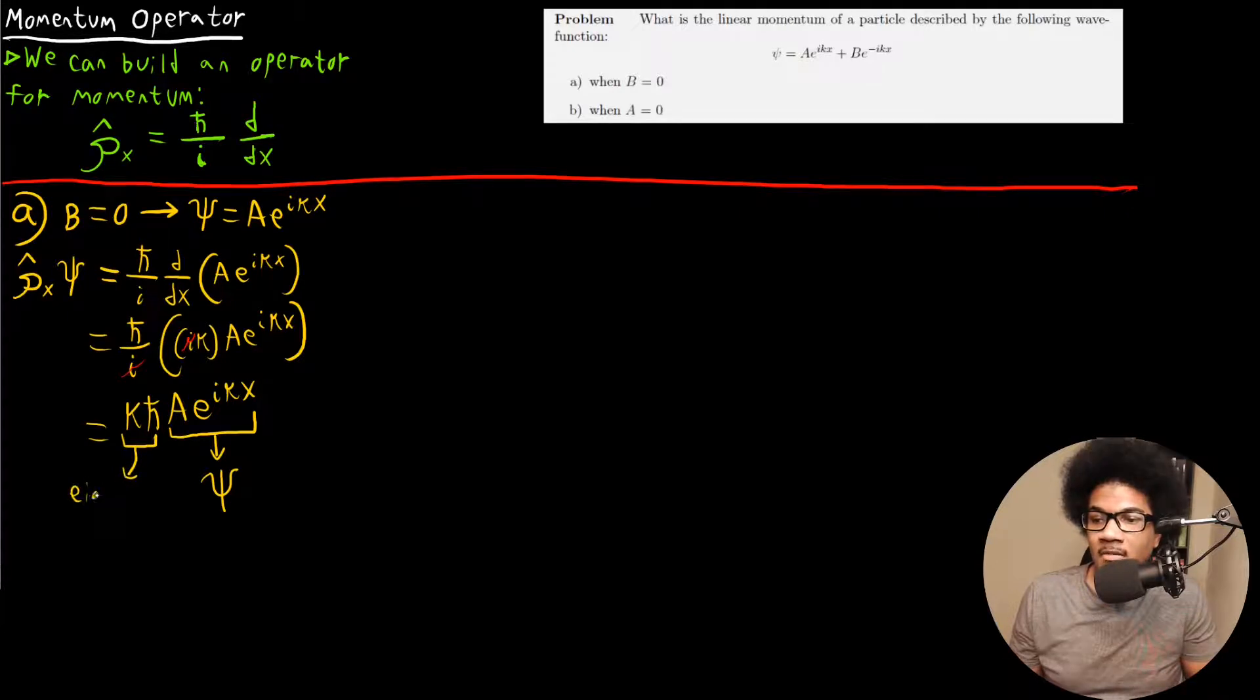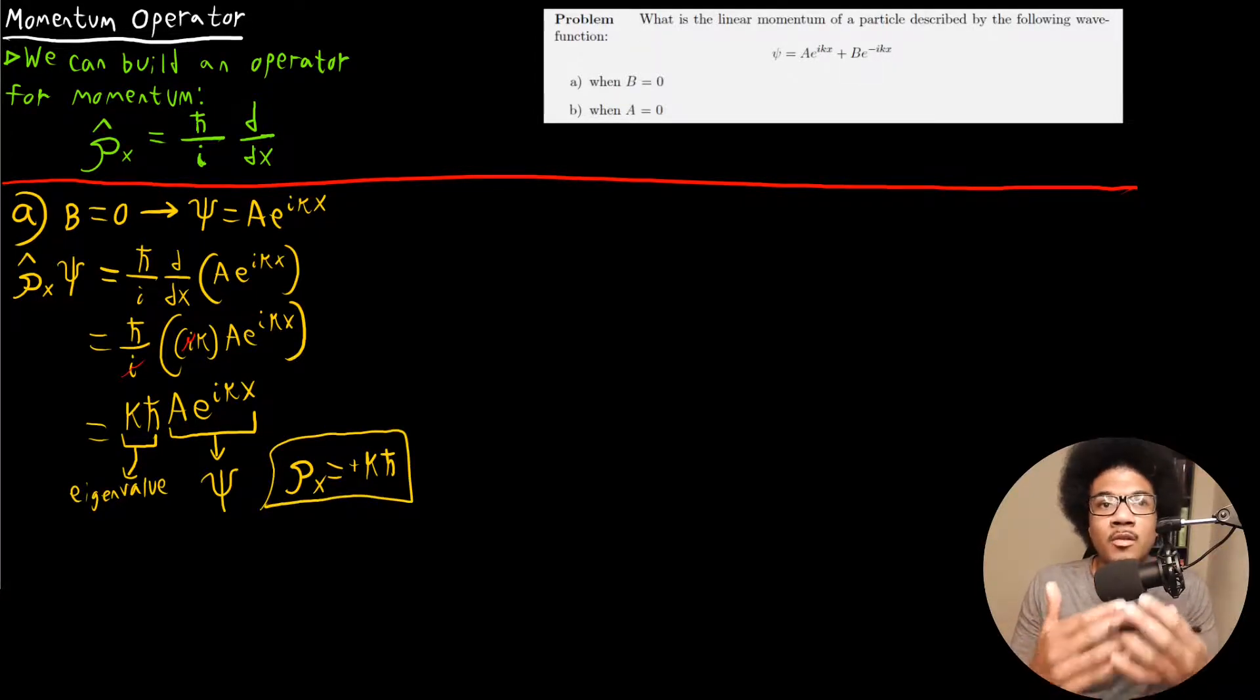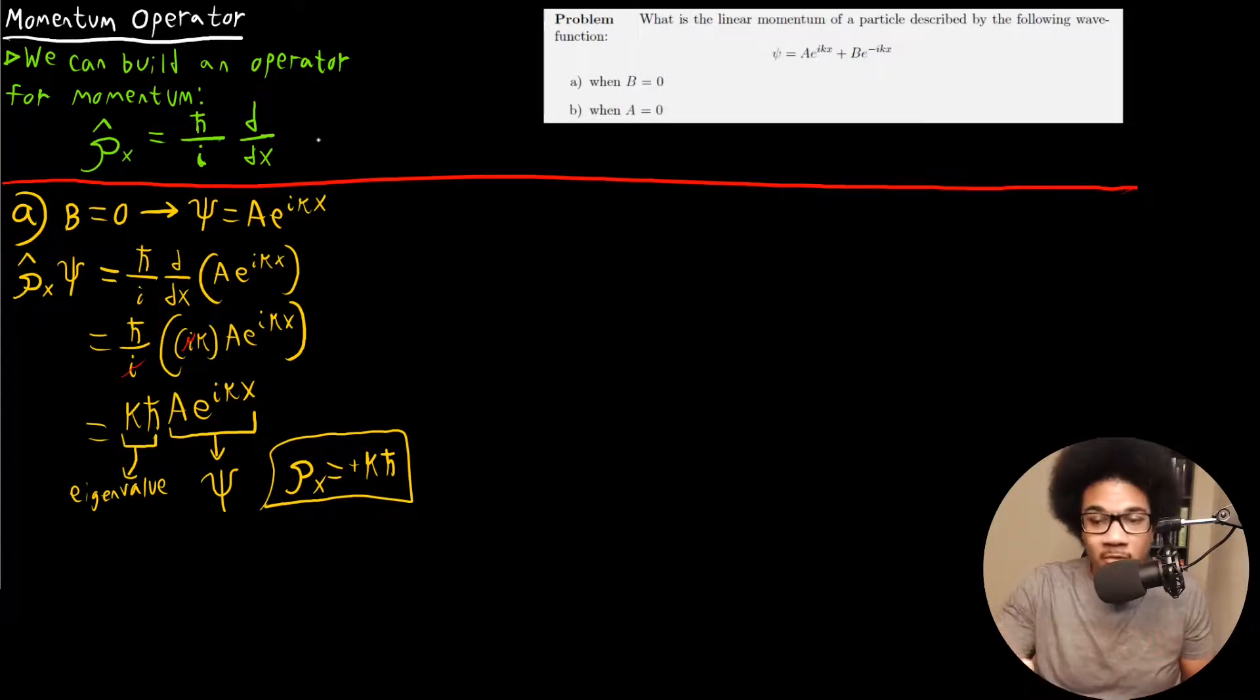That means this is our eigenvalue. So what that means is that we have a particle traveling with the momentum of positive KH bar. Our momentum in the X direction for this case is going to be KH bar. That's the linear momentum of the particle traveling in this direction. Applying the momentum operator to a wave function for a given system gives you its momentum, just like the Hamiltonian operator gives you the total energy.